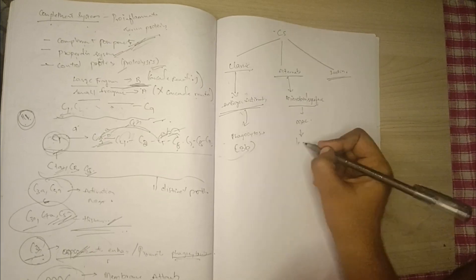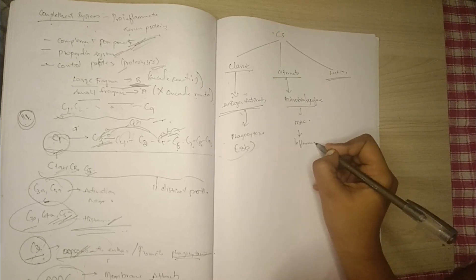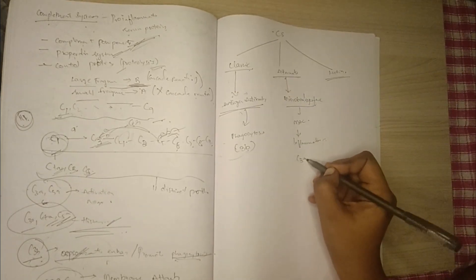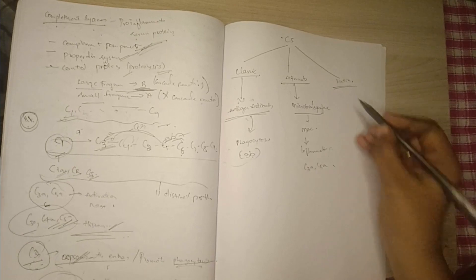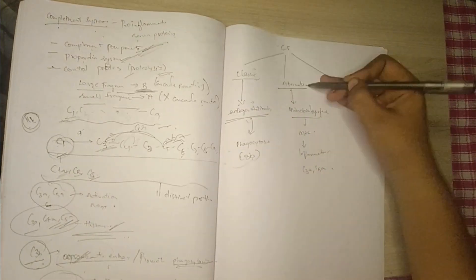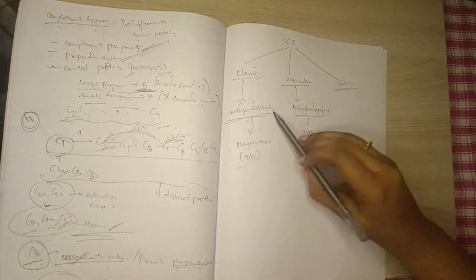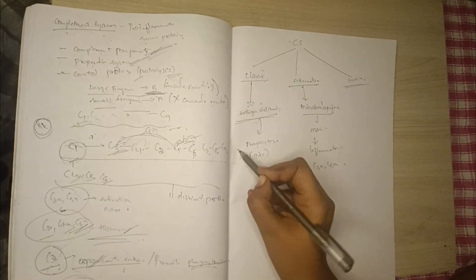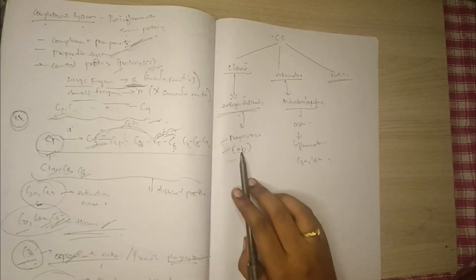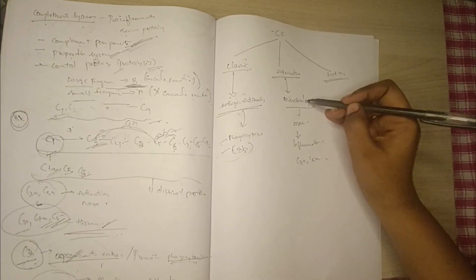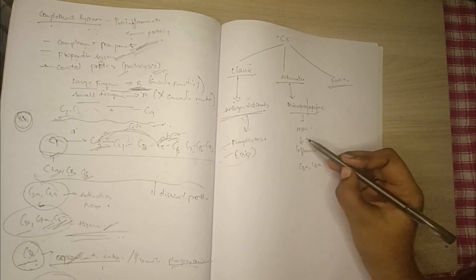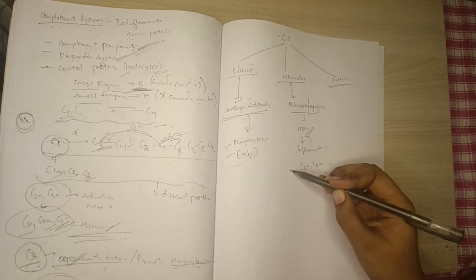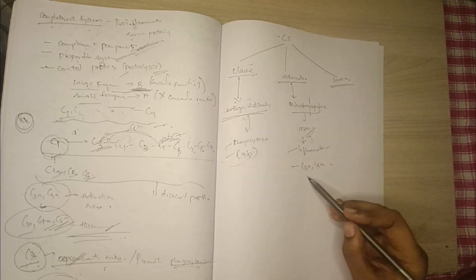In the alternate pathway, the microbial surface is destroyed by formation of the Membrane Attack Complex, and inflammation occurs. This alternate pathway is mediated by C3a and C5a, rupturing the microbial surface via the MAC complex.